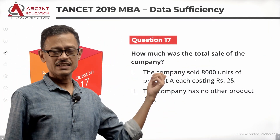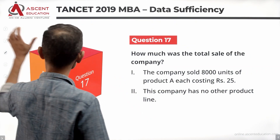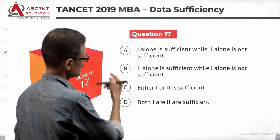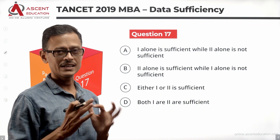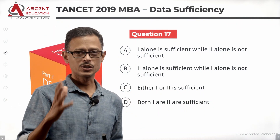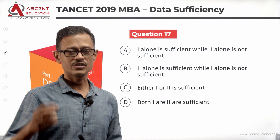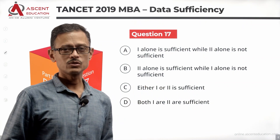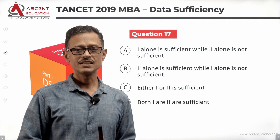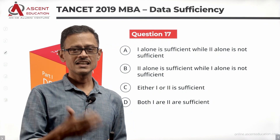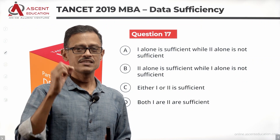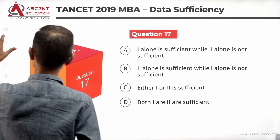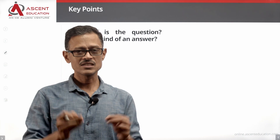How much was the total sale of the company is the question. Let's look at the answer options. So, these are the four answer options. Next step, let's take a look at what this question is asking. What kind of an answer will the question fetch? When is the data sufficient? We will look at the statements. The question is: what was the total sales of the company?